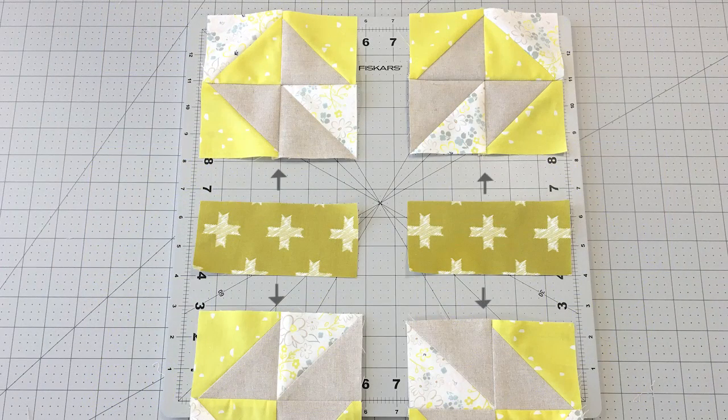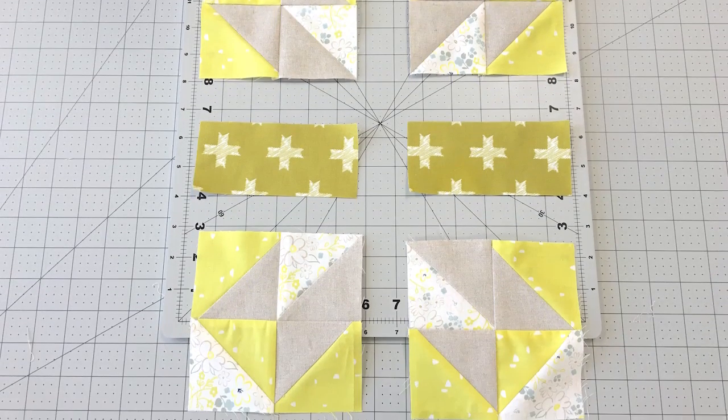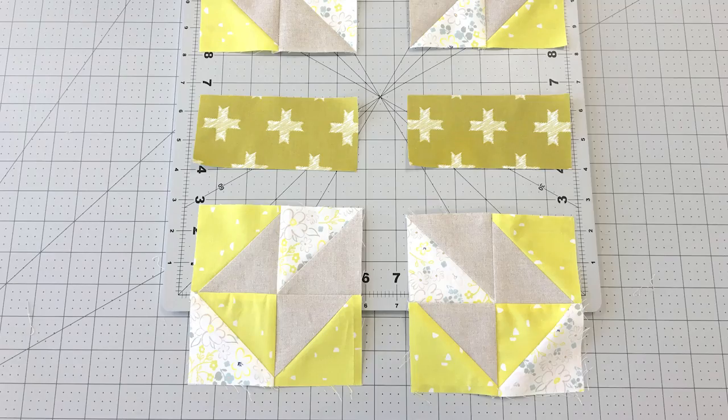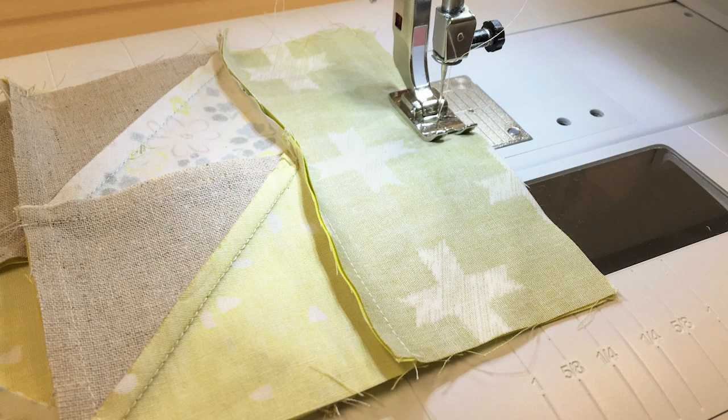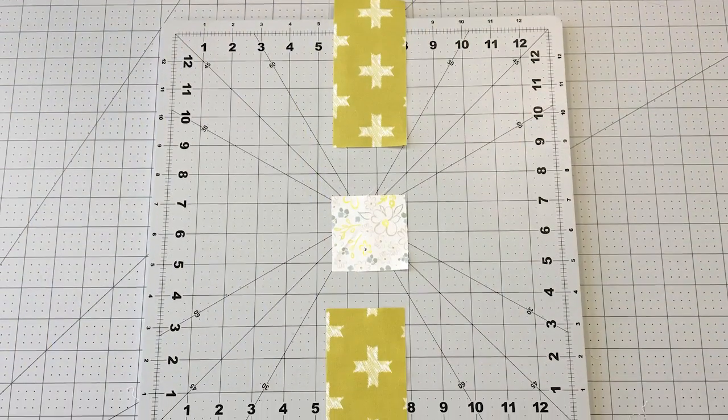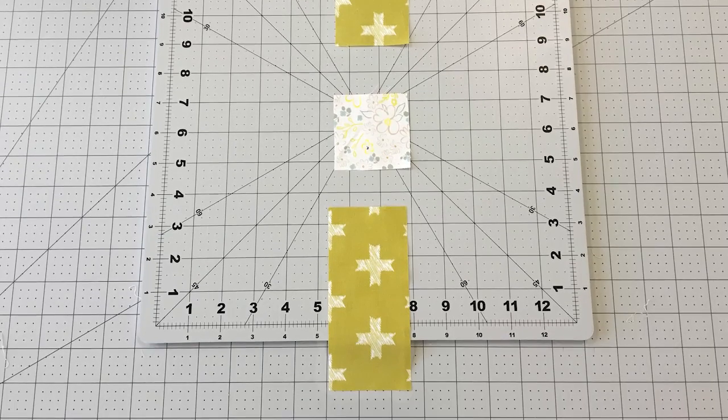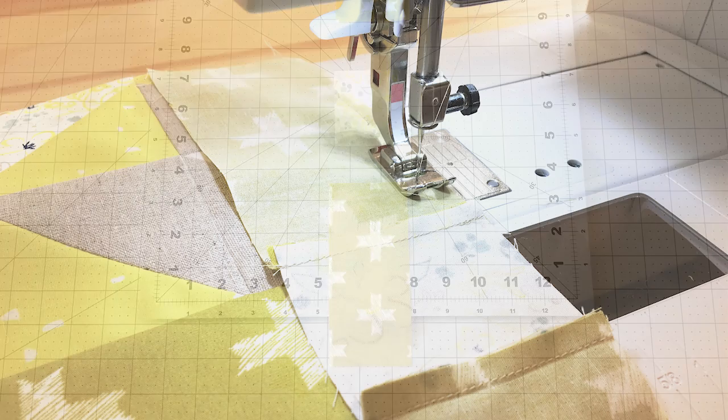Sew a two and a half by five and a half inch strip from fabric C in between each block. Make sure to sew with the back side of your fabric C facing up instead of sewing on the sides with all of your seams. This will help with less shifting of the fabric. To create the center of your block, sew a two and a half inch by five and a half inch strip from fabric C to each side of a two and a half inch square from fabric A.